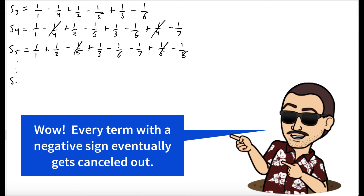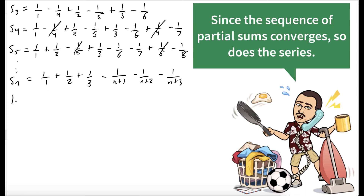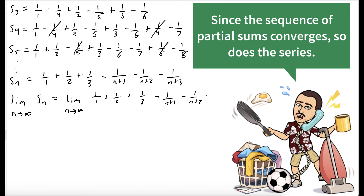We can see that the nth partial sum is 1 plus 1 half plus 1 third — those terms will never cancel out. Everything else cancels out except for the few negative terms at the end: minus 1 over n plus 1, minus 1 over n plus 2, and minus 1 over n plus 3. So what we'll do now is take the limit as n goes to infinity of the nth partial sum. If this converges, then our series converges. It's the limit as n goes to infinity of 1 plus 1 half plus 1 third, minus 1 over n plus 1, minus 1 over n plus 2, minus 1 over n plus 3.